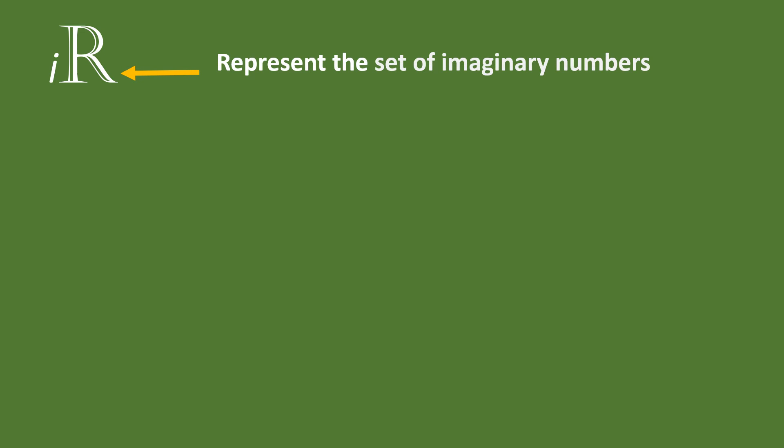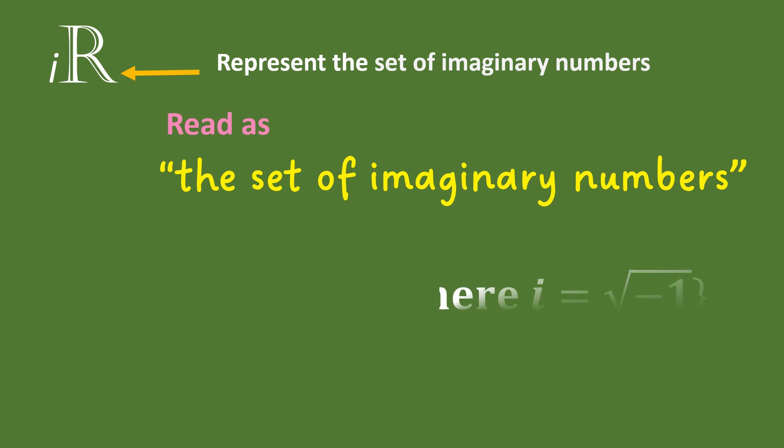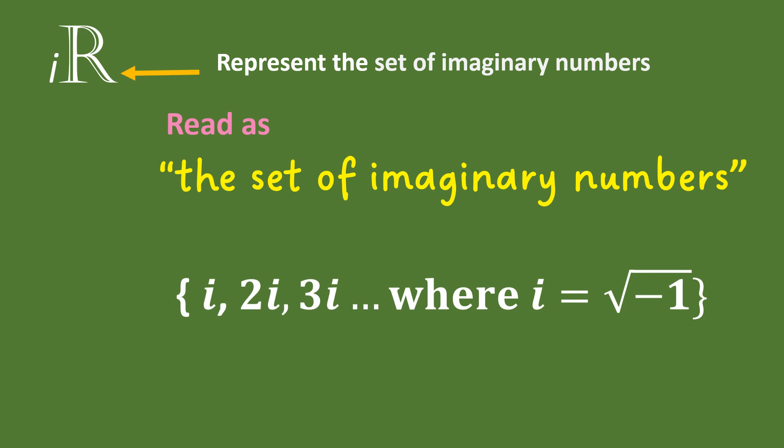When you see this symbol, it represents the set of imaginary numbers, and it is read as the set of imaginary numbers. An imaginary number is i, 2i, 3i, where i is equal to the square root of negative 1. So whenever there is a negative number inside the radical sign, then it is an imaginary number.